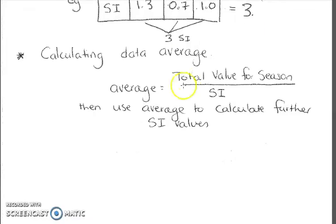Calculating data average, we can calculate the data average by total value for a season divided by seasonal index. Then we can use this to calculate further seasonal index values.